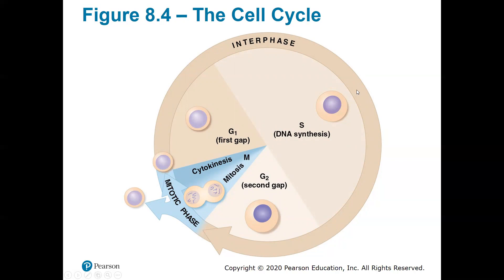Cells will spend most of their life in interphase, which can be divided into different stages: G1, S, and G2. G1, or the first gap, is what I like to call the first growth stage. This is when a new cell will actually start to grow and get larger and undergo the normal functions it has been programmed to do. If it is a muscle cell, it will be a muscle cell; if it's a skin cell, it will be a skin cell and grow doing its normal cellular function.